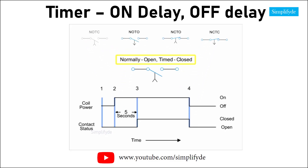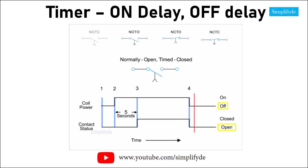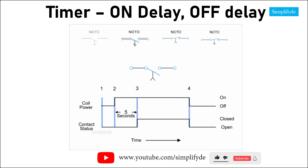First, we have the normally open timed closed (NOTC) contact. This type of contact is normally open when the coil is unpowered or de-energized. After the coil has been continuously powered for a specified amount of time — in this example, five seconds — the contact is closed. The contacts will immediately open when the coil is de-energized.